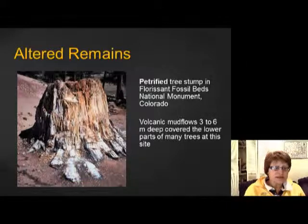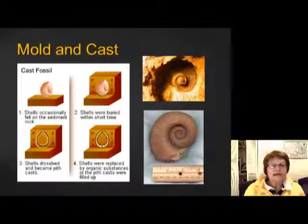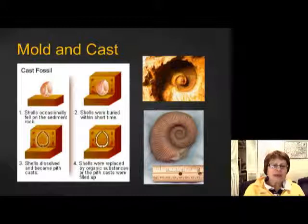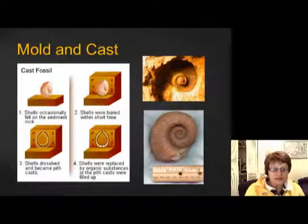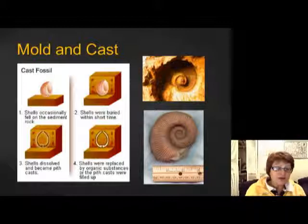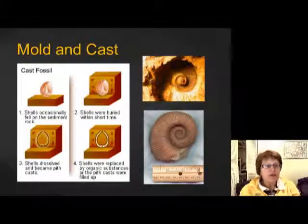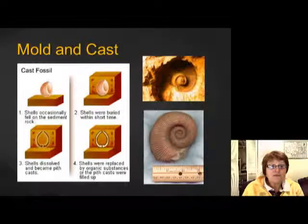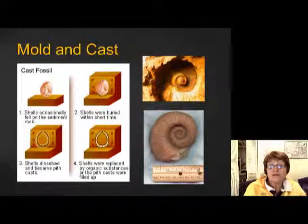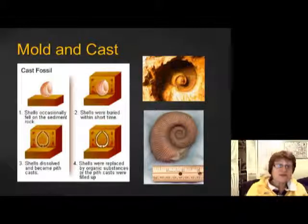This slide shows the formation of mold and cast. When an animal lies down on the seafloor and gets covered up, later during diagenesis some liquid goes through and dissolves the original skeleton material, leaving a hole. That hole is called a mold. Later on, the hole can be filled up with other sediments, creating a cast. When you dig it out, you can see all the features of the original animal, but the skeleton structure is different because it's just filled sediment.